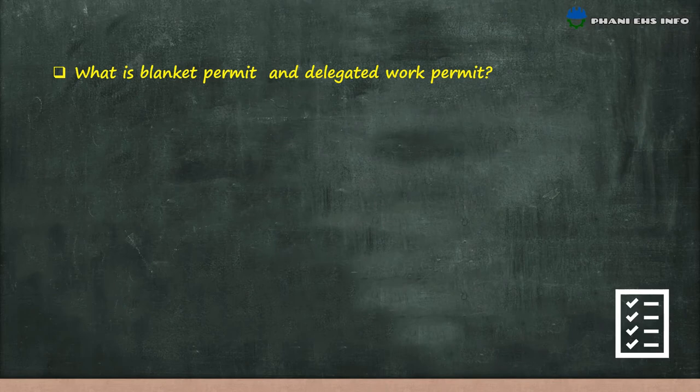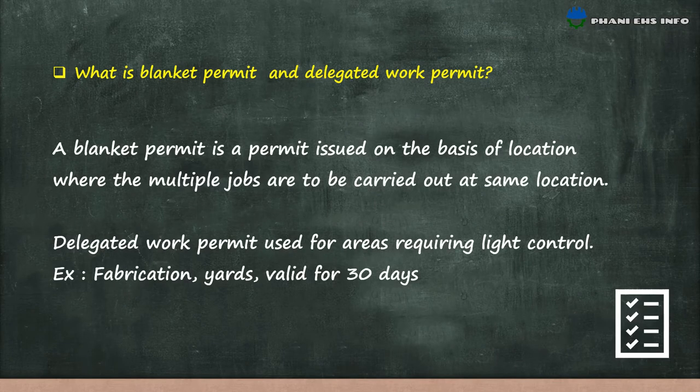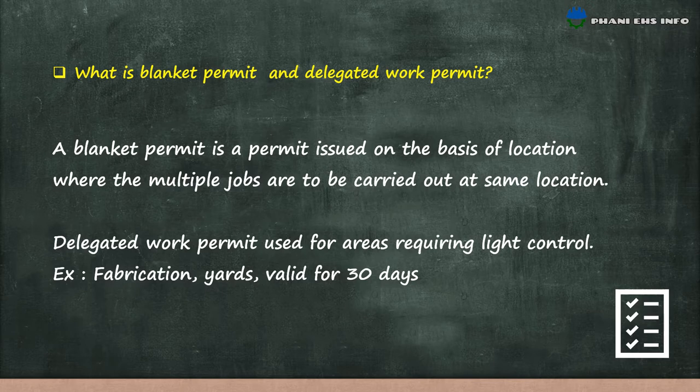What is a blanket permit and delegate work permit? A blanket permit is a permit issued on the basis of location where multiple jobs are to be carried out at the same location. A delegated work permit is used for areas requiring light control, for example in fabrication yards, and is valid for 30 days.